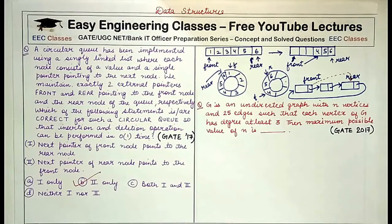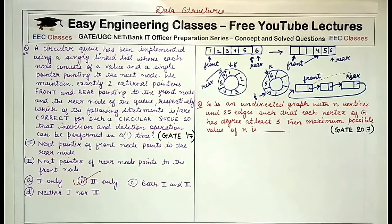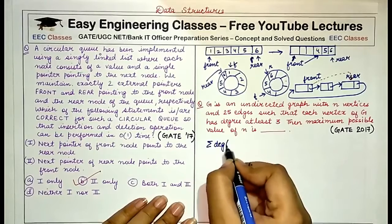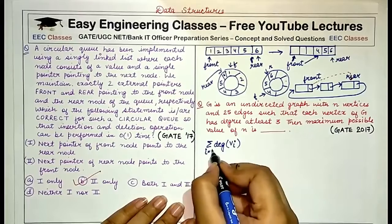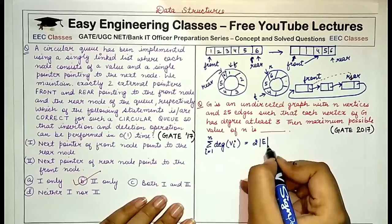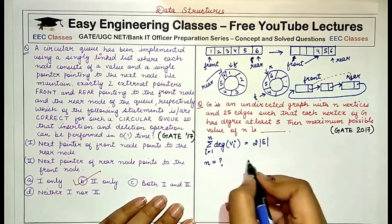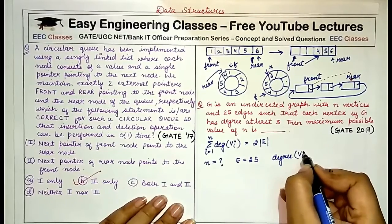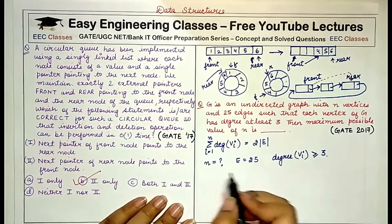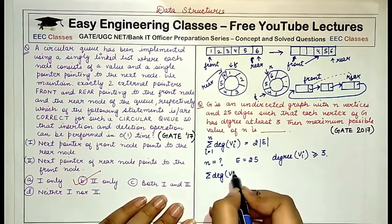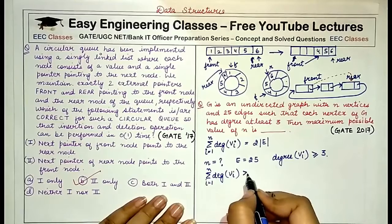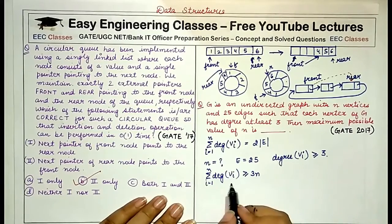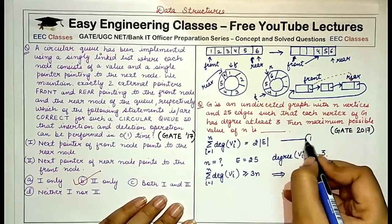This question uses the formula for the sum of degrees of vertices. We know that the sum of degrees of all vertices v_i, for i from 1 to n, equals twice the number of edges. Here n is unknown and e = 25. Since the degree of each vertex is greater than or equal to three, the summation of degrees is either equal to 3n (the minimum case) or greater than 3n.